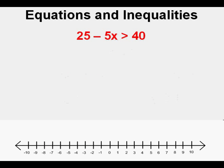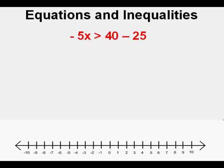Here's another one: 25 minus 5x is greater than 40. First step, we move the 25 to the right side, where it becomes negative 25. We combine like terms on the right, so 40 minus 25 makes 15. To solve for x, we need to divide both sides by negative 5, so the right side is negative 3.